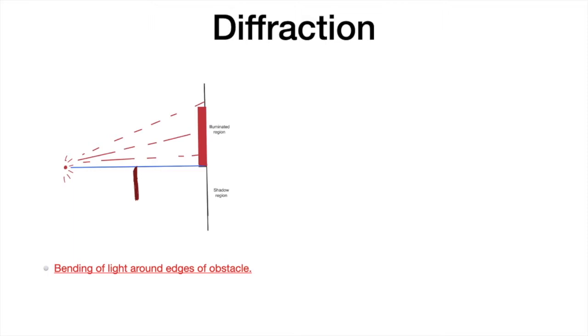So according to ray optics, it would be expected that half of the screen which is above the knife edge should have uniform illumination, and the area which is just behind the knife edge should be completely dark, that we define as a shadow region.